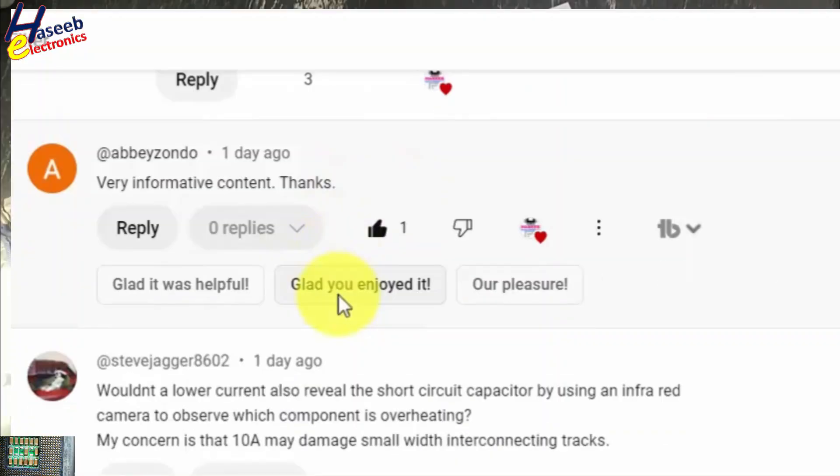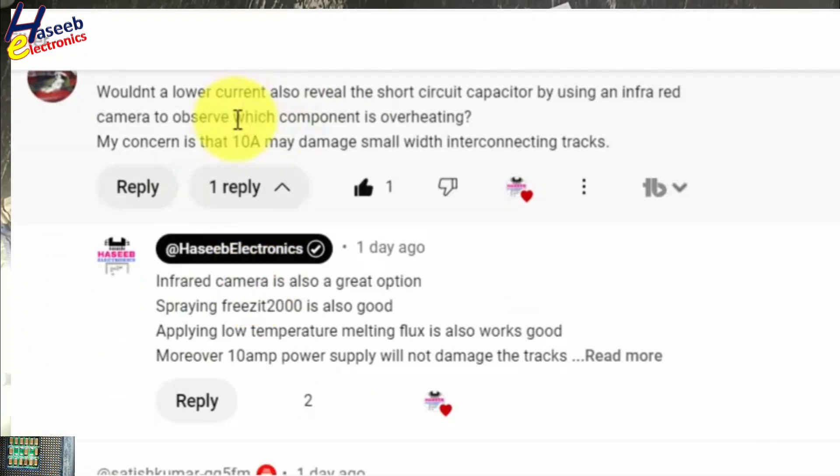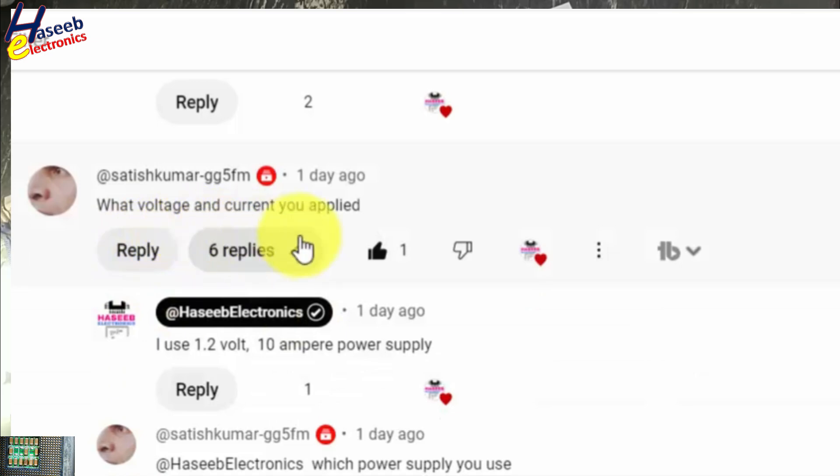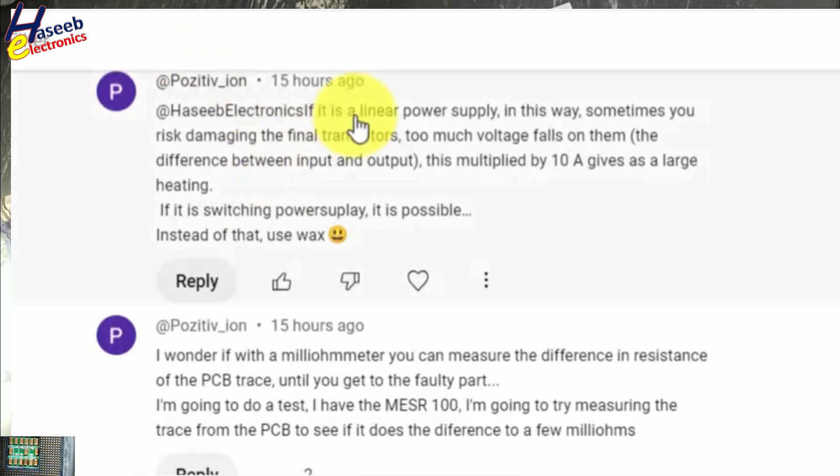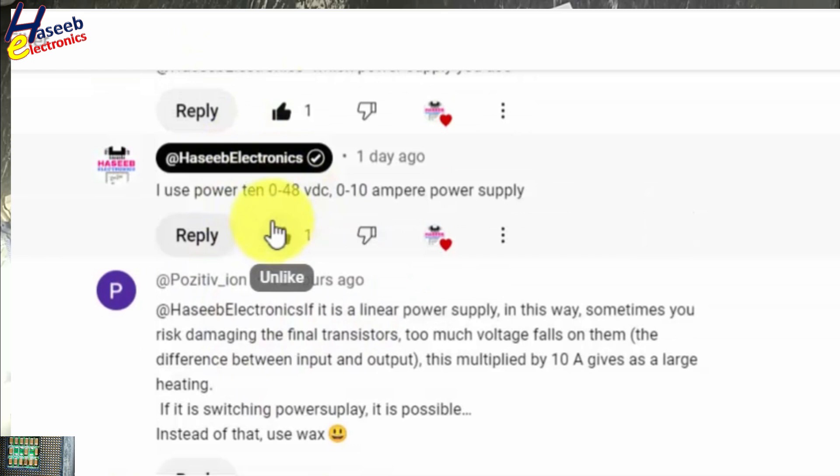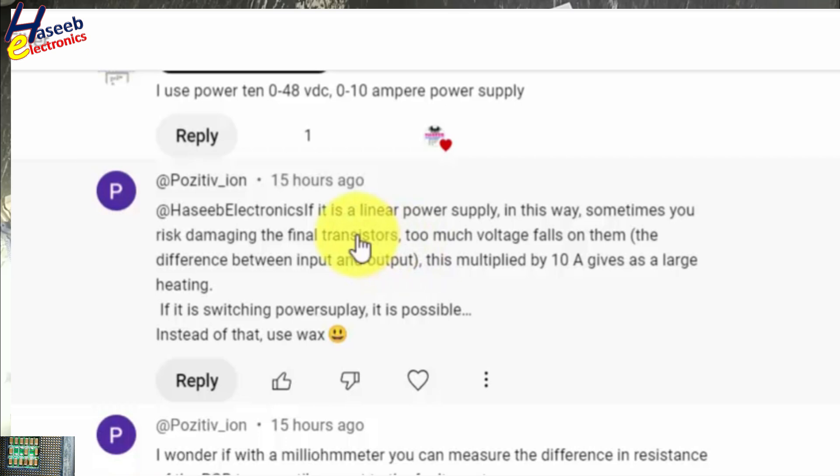Would not lower current or review short circuit capacitor by using an infrared camera? Yes, we can use infrared camera, we can use thermal camera. What voltage and current you applied? This comment as a reply for my comment: 0 to 48 volt DC, 0 to 10 ampere. It is linear power supply for workbench.